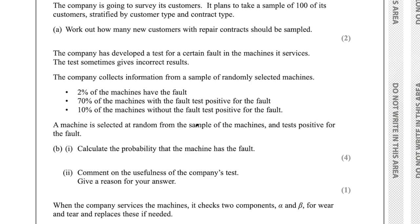Part B says the company has developed a test for a certain fault in the machines it services. The test sometimes gives incorrect results. 2% of the machines have the fault. 70% of the machines with the fault test positive. 10% of the machines without the fault test positive. A machine is selected at random and tests positive. Part B, part 1 says calculate the probability that the machine has the fault. This question involves conditional probability — the condition is that it tests positive.